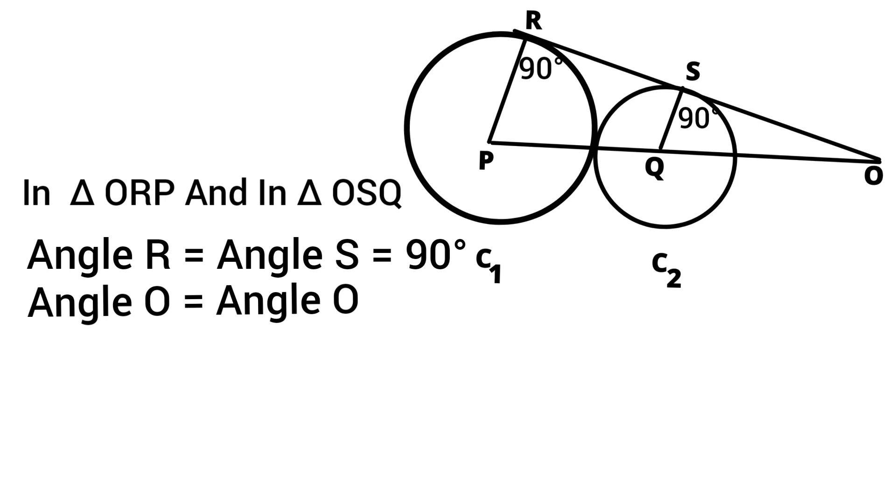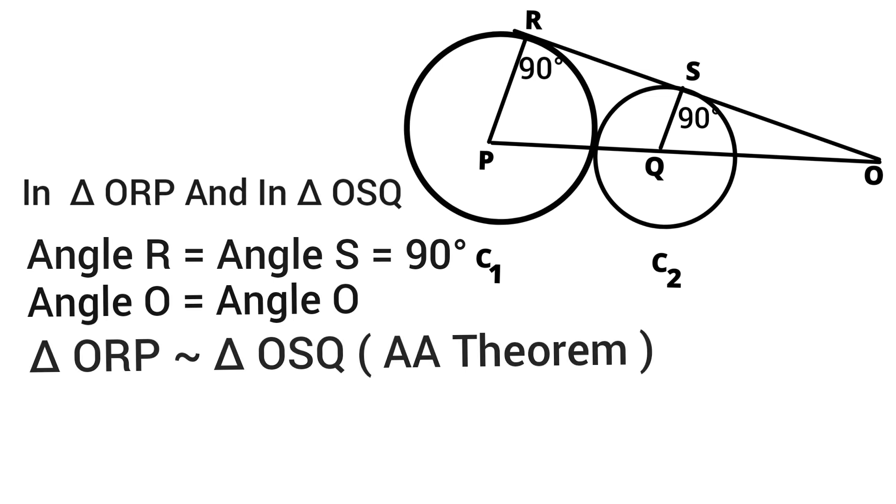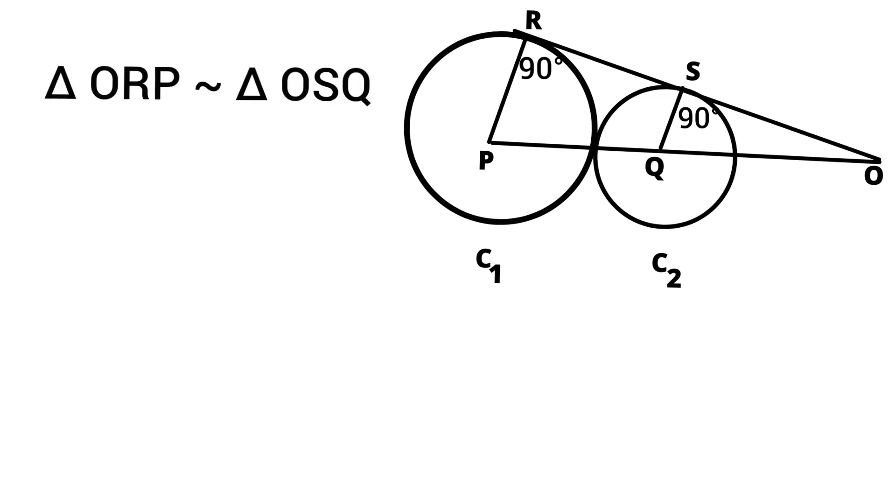So we can write that triangle ORP is similar to triangle OSQ on the basis of angle angle theorem. And recall that if two triangles are similar to each other, then their corresponding sides are in equal proportion.